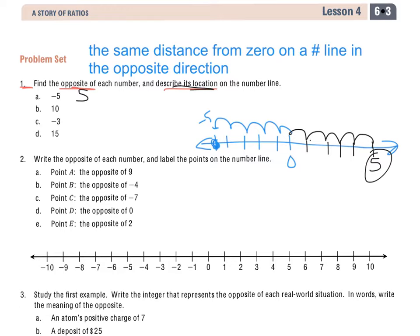Now if I have to describe its location on the number line, it's going to be 5 jumps to the right of 0 because my initial number was 5 jumps to the left.